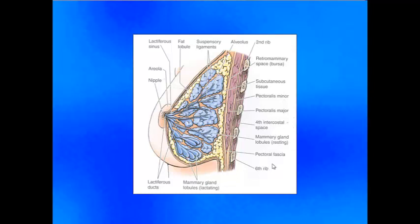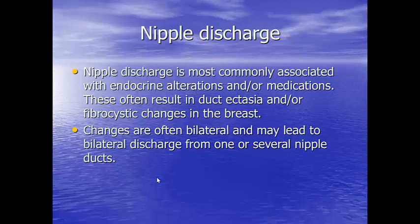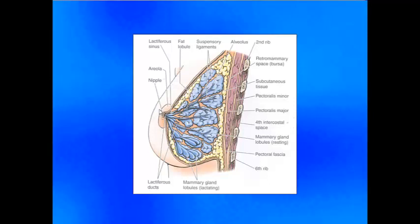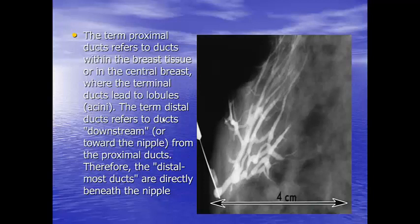We have from 15 to 20 ducts opening on the surface of the nipple. They start within the mammary gland at the terminal ductal lobular unit, and then go toward the major duct. We have from 8 to 15 major ducts opening on the surface of the nipple.